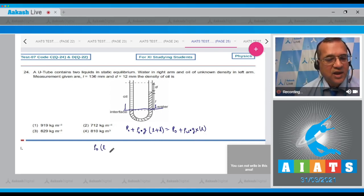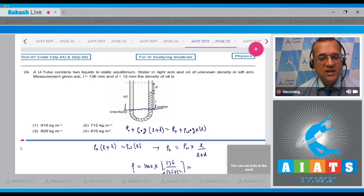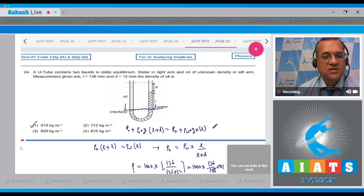So equating the pressure, what do you get? Rho naught times L plus D is equal to density of water into L. So therefore, the density of the oil is equal to the density of the water multiplied by L divided by L plus D. Now, the density of the water is 1000 and this L is given to be 136 mm. No doubt you can take as such 136 plus 12 because of same units so they cancel out. And when you solve this, that is 1000 multiplied by 136 divided by 148 and this value comes to be 919 kg per meter cube. So 919 is the answer. The first is the choice.